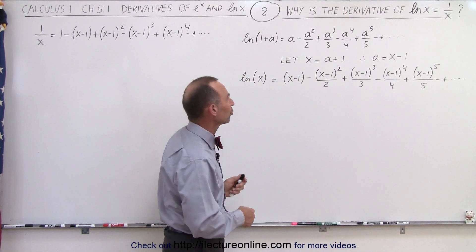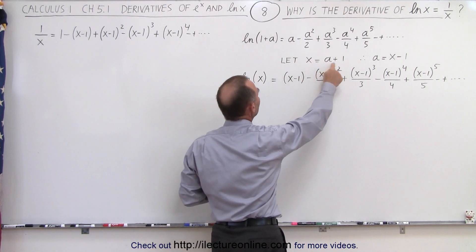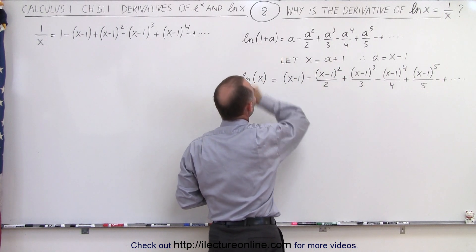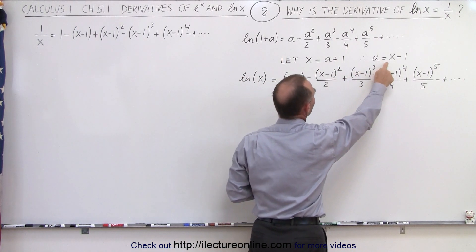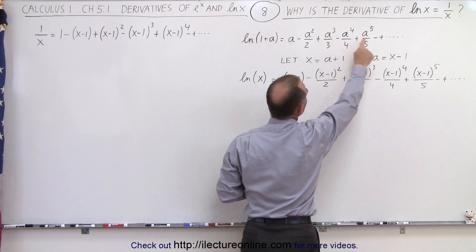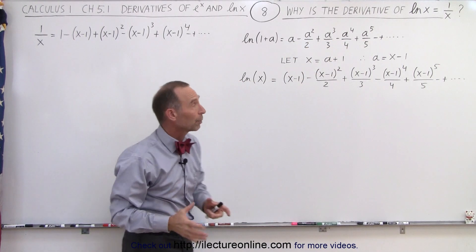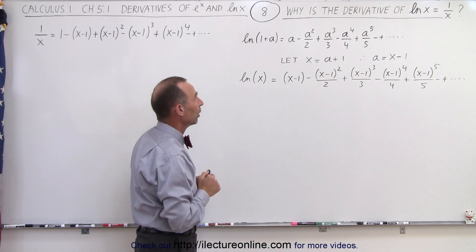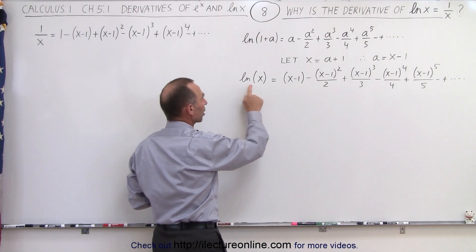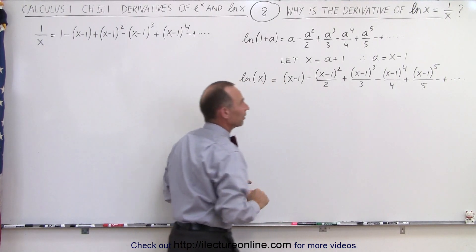Now we're going to make a substitution. We're going to let x equals a plus 1, so that this becomes x. Then, we realize that a is equal to x minus 1, so every a in the infinite series now needs to be replaced by an x minus 1, which means that the natural log of x can be written as this infinite series.